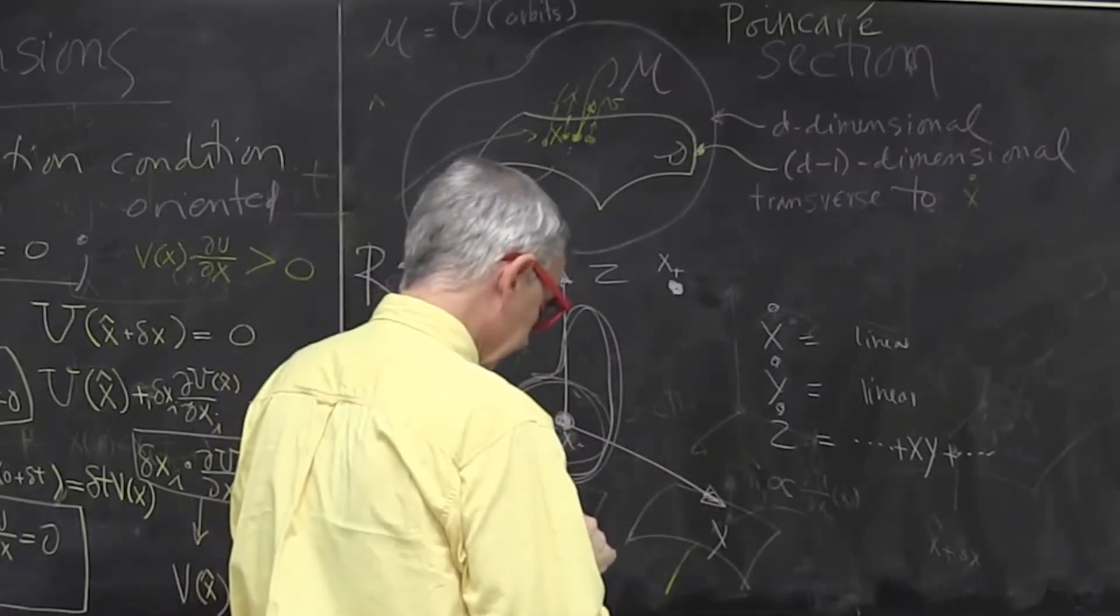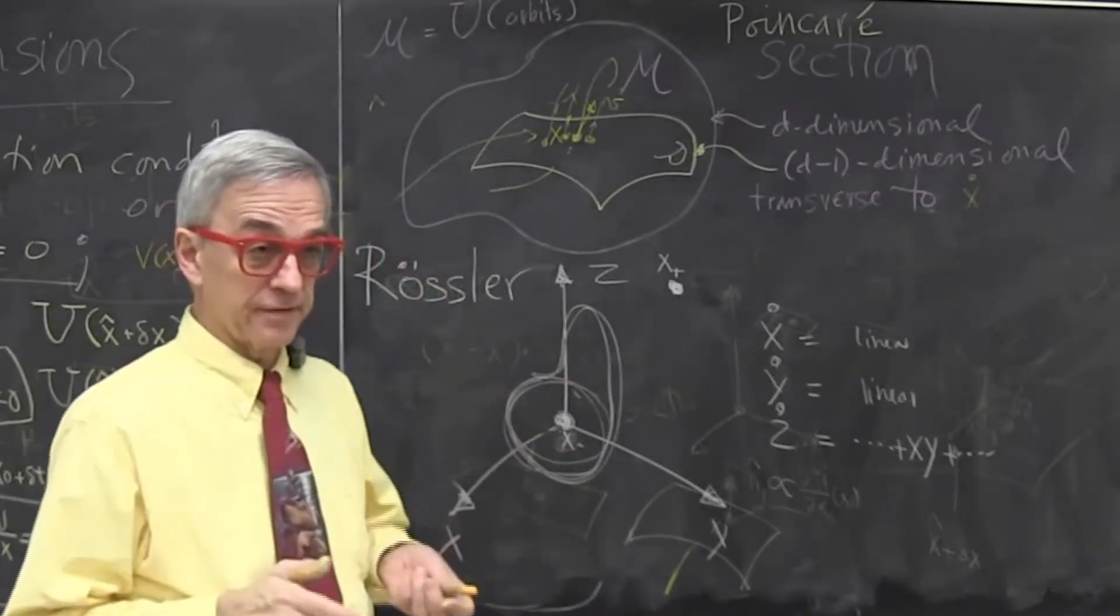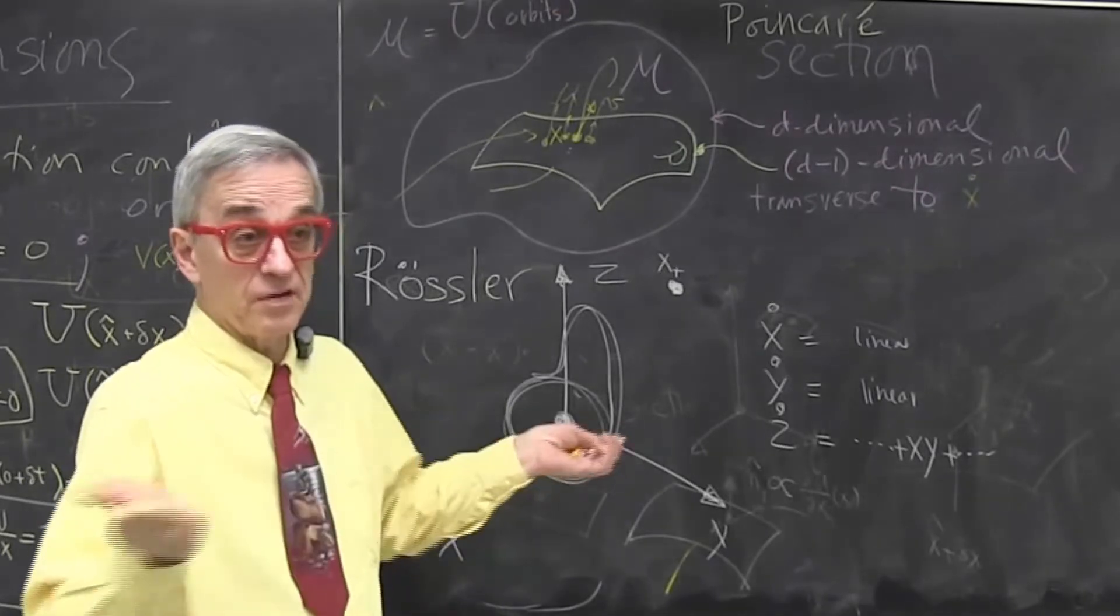How do you choose Poincaré sections? So here you are lucky. It's three dimensions. You are human. You can visualize three dimensions. Poincaré section is two dimensional. So you try a plane.